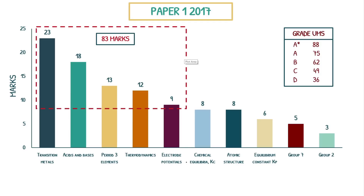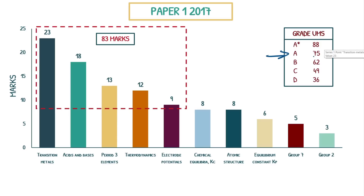Looking at the major topics included, the first five — transition metals, acids and bases, period three elements, thermodynamics, and electro potentials — make up 83 marks alone. If you absolutely smashed your revision for these topics and got all the marks possible, you would have got an A, midway between an A and an A star. You see there are so many topics in the specification, but you only really need to nail five to get an A. Throughout this video, this red dashed box is going to highlight a baseline of an A grade.